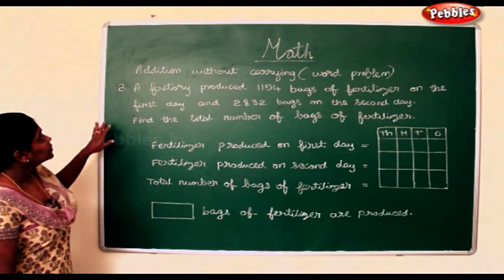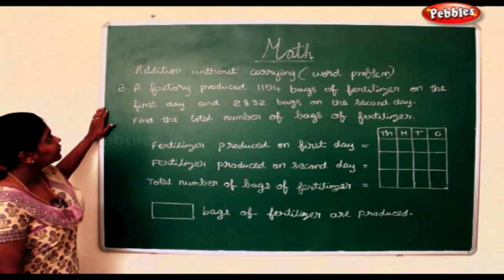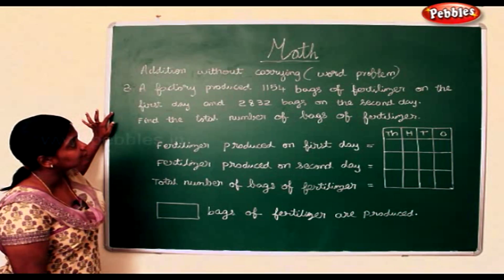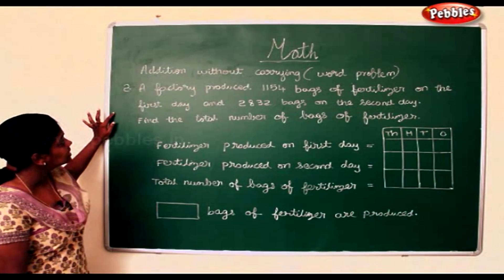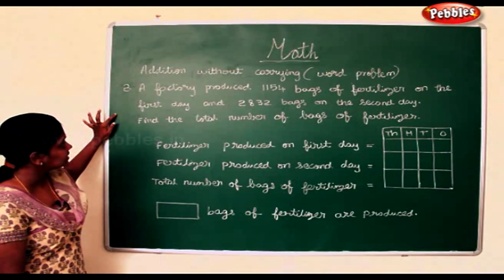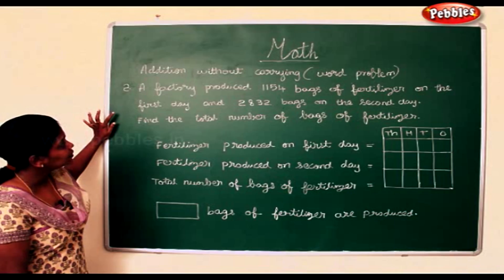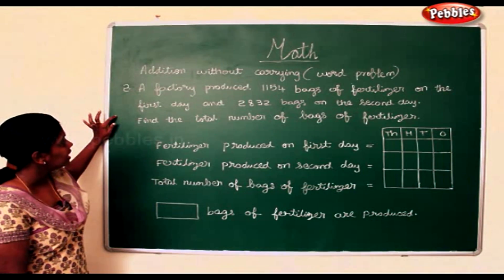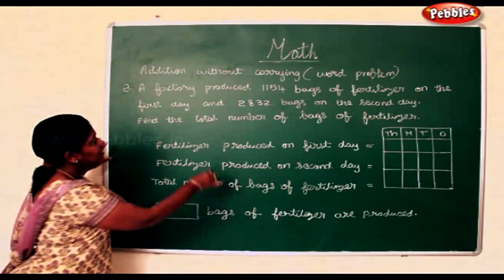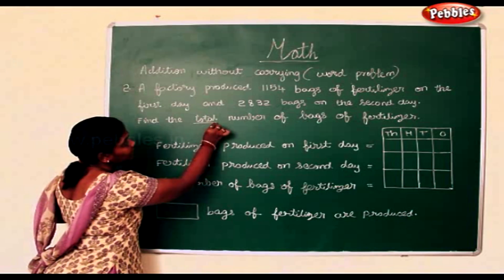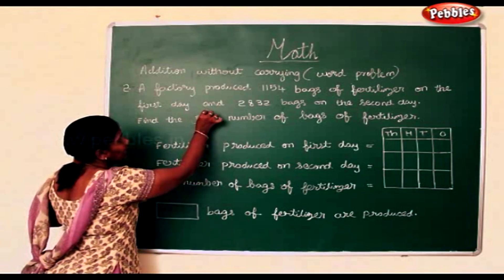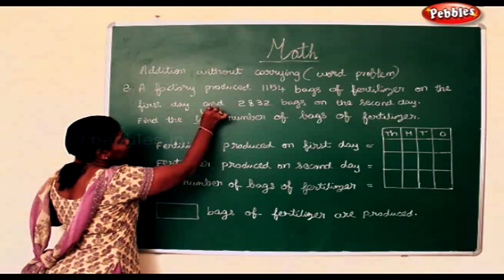Now the second sum. A factory produced 1,154 bags of fertilizers on the first day and 2,832 bags on the second day. Find the total number of bags of fertilizer. Total again means addition.